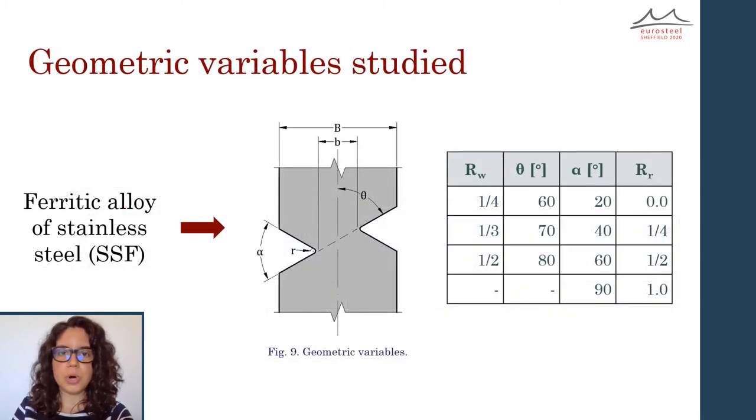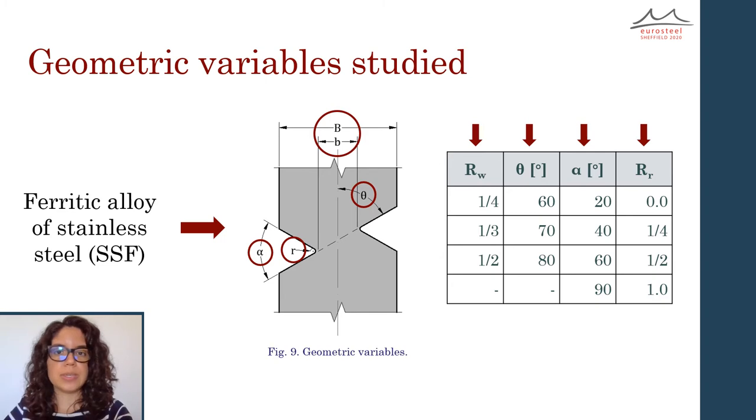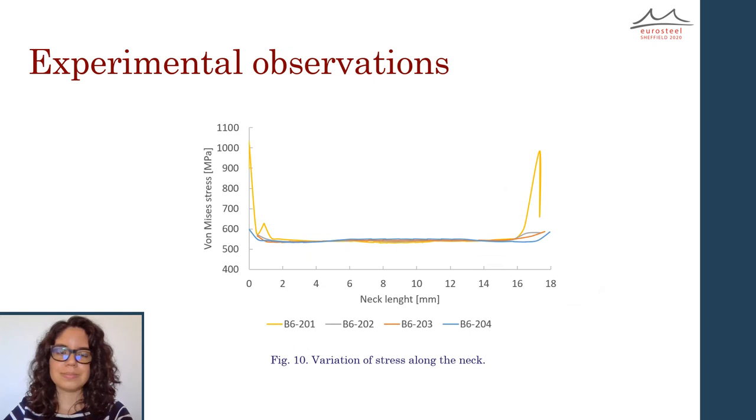Having calibrated the model, the geometric study was conducted using the ferritic alloy of stainless steel. Four geometric variables were explored: r sub w, or the ratio between the width of the specimen and the width of the neck; the neck's angle theta; the opening angle alpha; and r sub r, or the ratio between the specimen's thickness and the root of the notch.